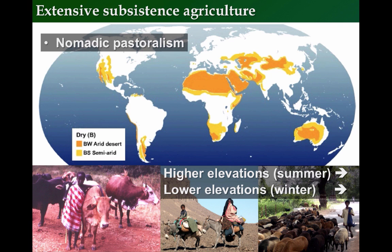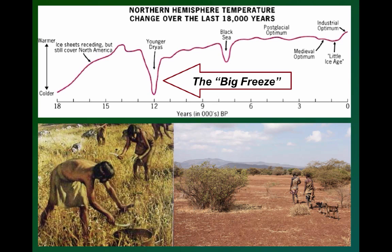These early agriculturalists set the foundations for the civilizations that would soon follow. It is arguable that had the big freeze not occurred, the world would still be entirely inhabited by hunter-gatherers. We likely owe our modern world to our ancestors who adapted to the changing conditions of their world. And there was much rejoicing.